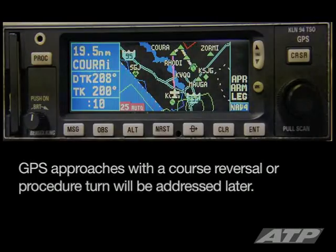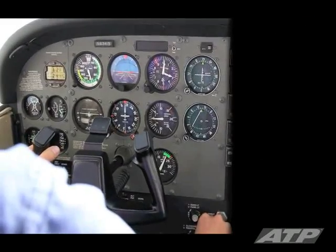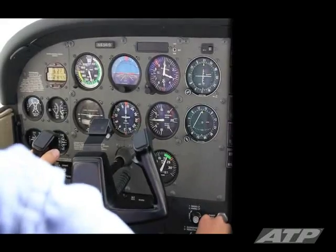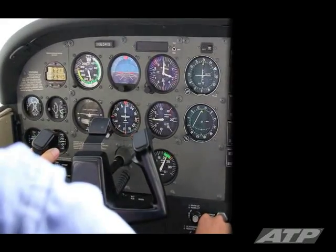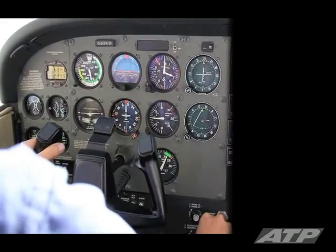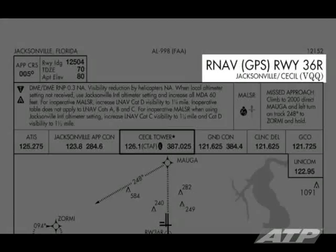Approximately 20 nautical miles from your initial approach fix, or the airport if on vectors, complete your remaining pre-approach checklist items. Complete a thorough approach briefing by reviewing the approach plate, including a briefing of the missed approach. This is the RNAV GPS approach to runway 36R at Cecil Field.